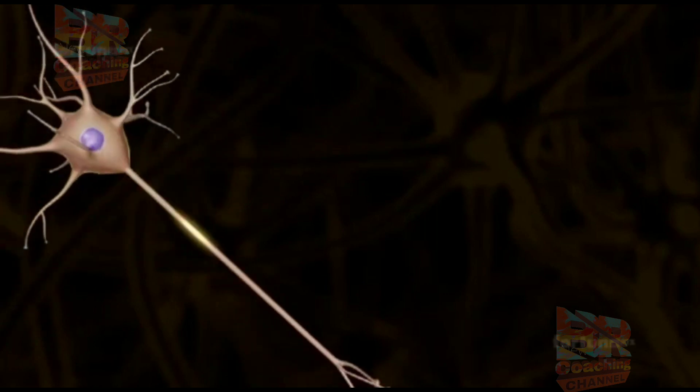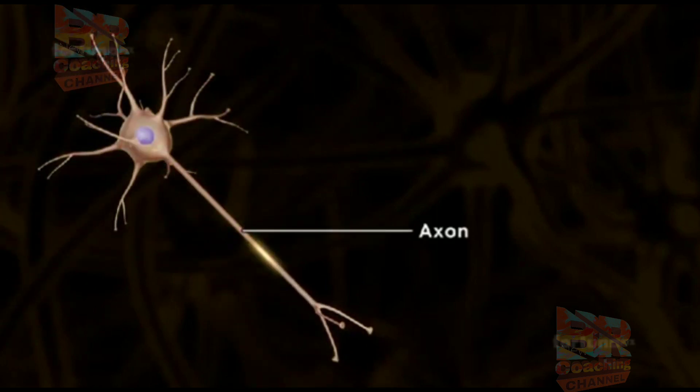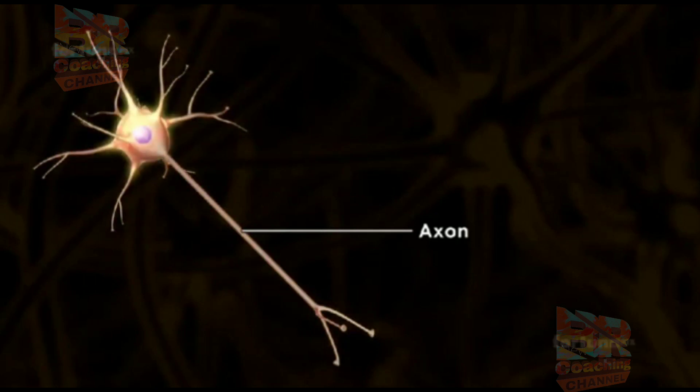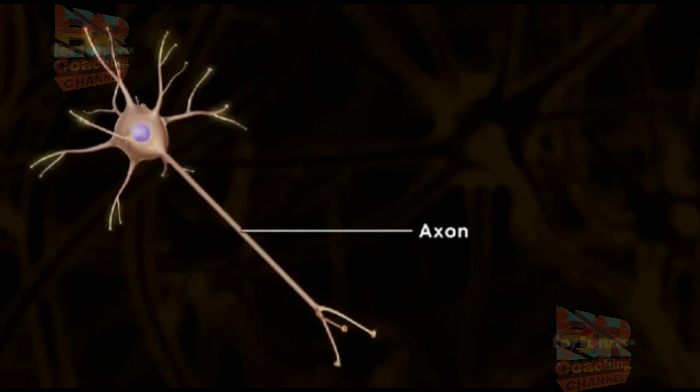Each neuron has one long thicker extension known as the axon extending from the cell body. Axons carry the impulses away from the cell body and to the dendrites of other neurons.